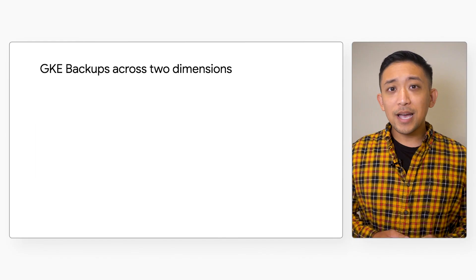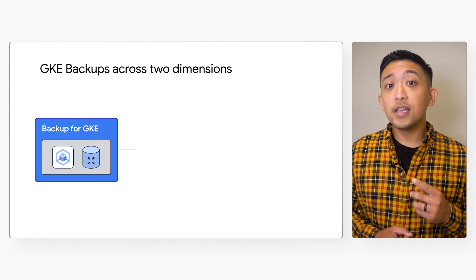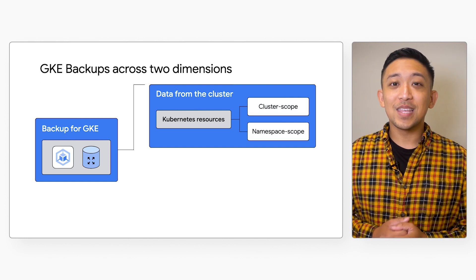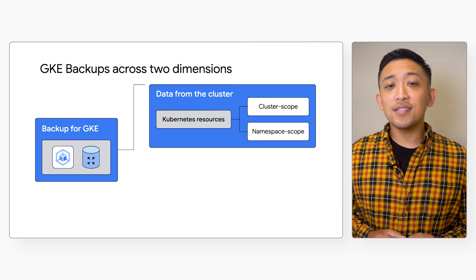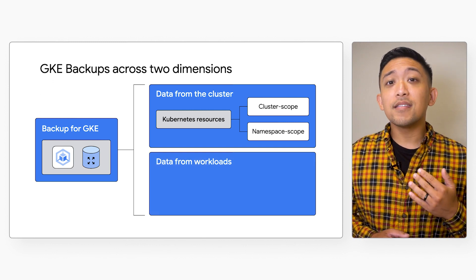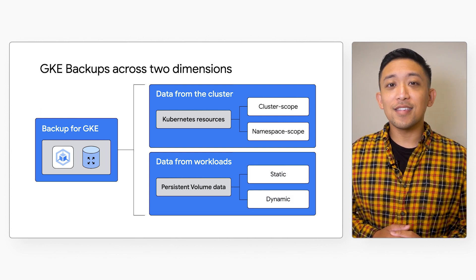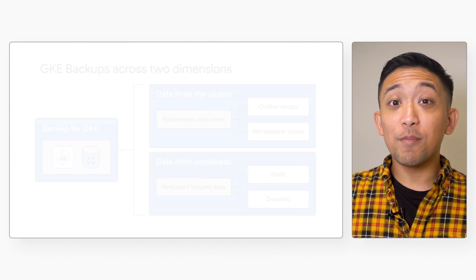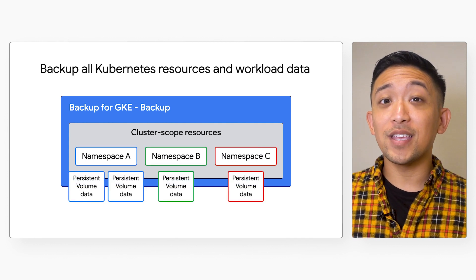So enter Backup for GKE — a fully managed solution to automate the backup and restore lifecycle for GKE users. Backup for GKE can perform backup and point-in-time restore operations across two dimensions. First is the backup of Kubernetes configuration for resources running in your cluster — the actual YAML itself. We can think of this as the state of the cluster, including both cluster and namespace scope resources persisted in the Kubernetes control plane. Second is the backup of data residing in persistent volumes utilized by workloads — the state that is owned by the workload, like stateful workloads that mount volumes and write data to those volumes.